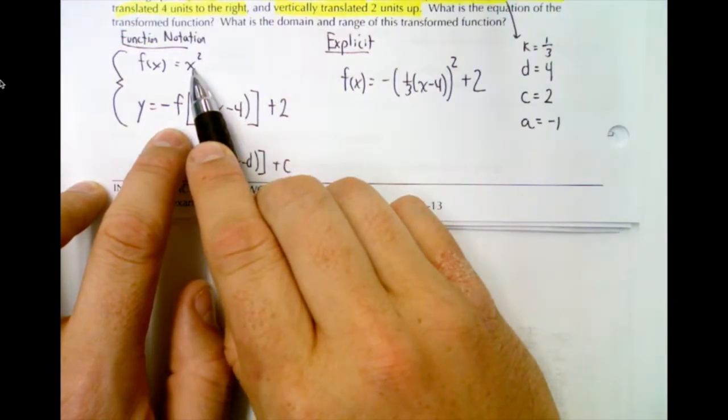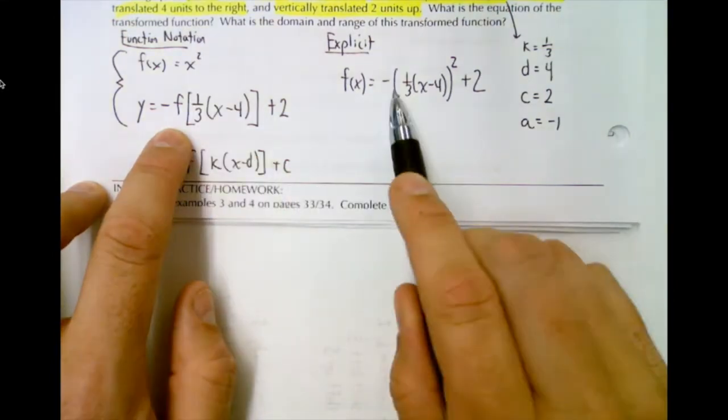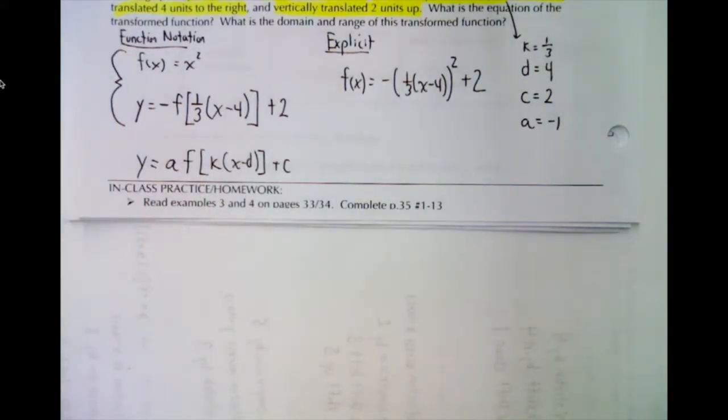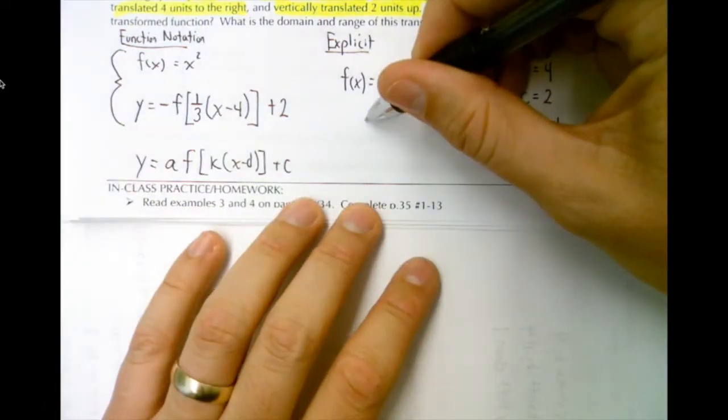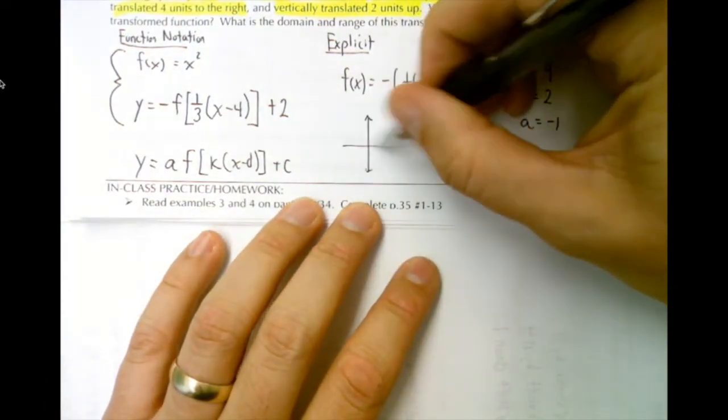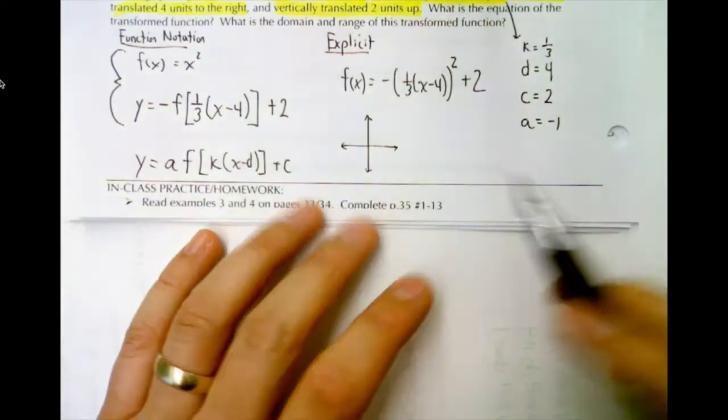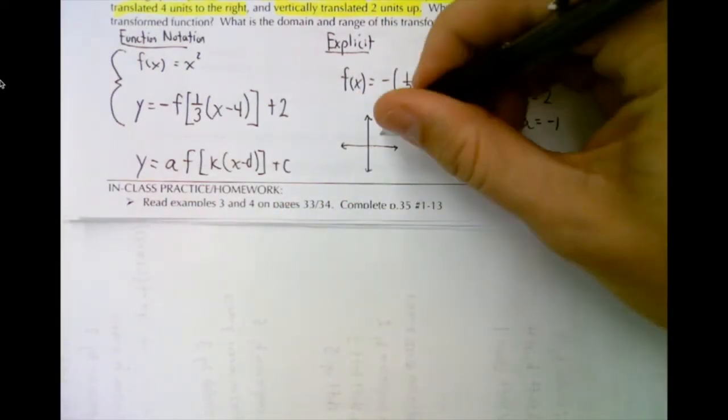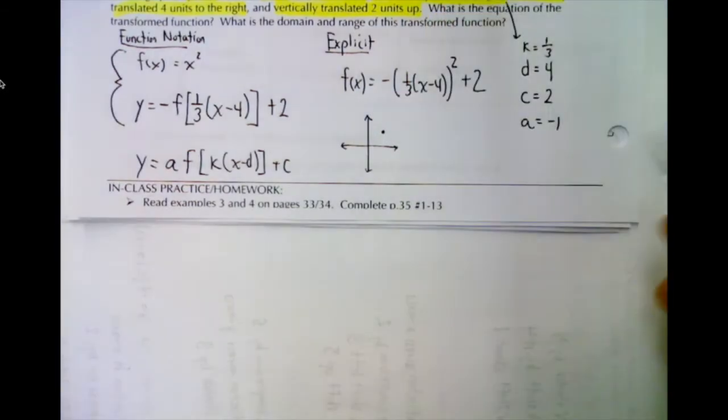So in that big bracket we're squaring it because it's the parent function. For domain and range it might help if we have a sketch. So to sketch we have a parabola. We're shifted to the right and up so our vertex is going to be over here and we're opening down.